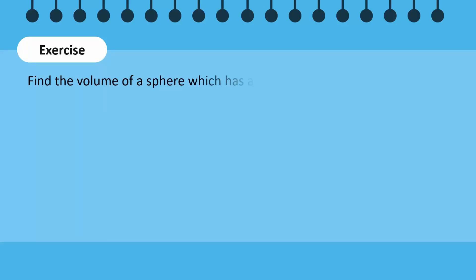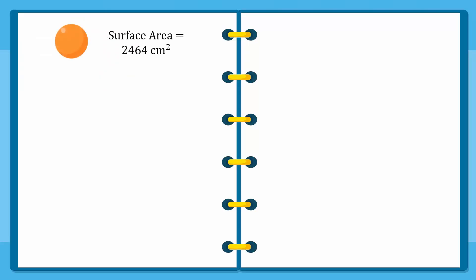Can you find the volume of a sphere if its surface area is known? This sphere has a surface area of 2464 square centimetres.